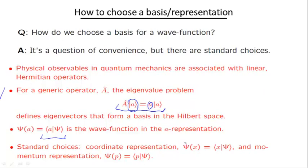A natural way to choose a basis is to use operators that are relevant to our problem, such as the coordinate operator in one-dimensional quantum mechanics or the momentum operator. The corresponding matrix elements Ψ(x) or Ψ(p) are called the coordinate representation and the momentum representation correspondingly.